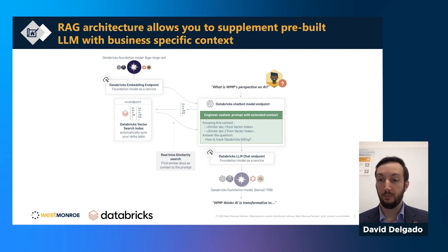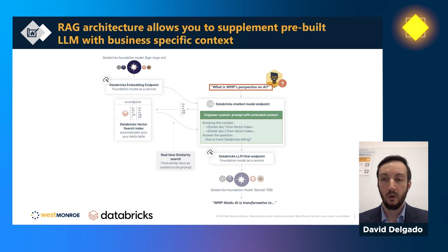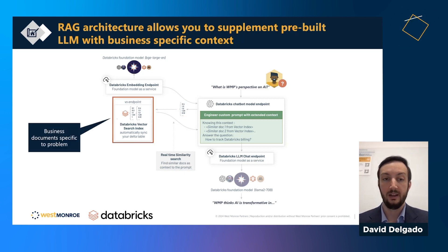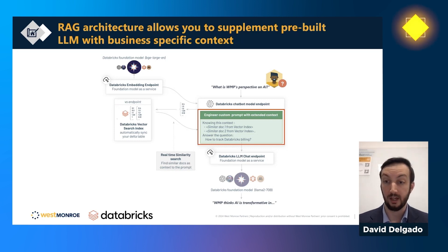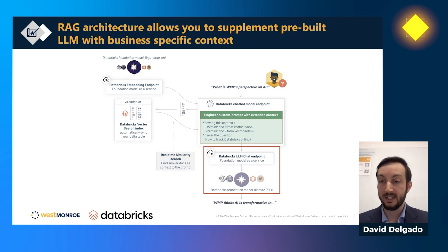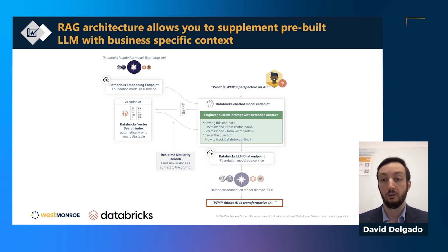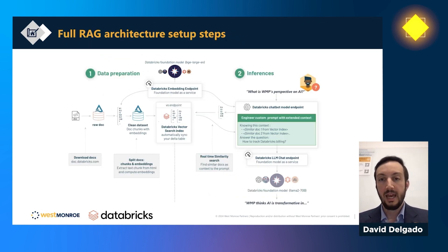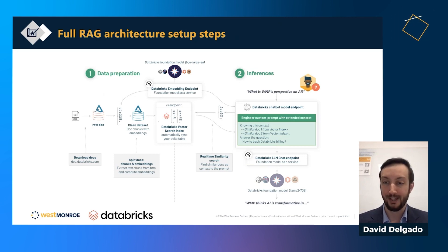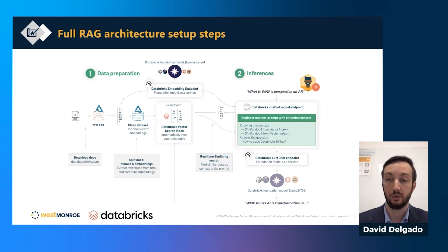This is the Databricks high-level RAG architecture. We ask the question 'What is Western Row's perspective on AI,' embed that question, and then search the business-domain-specific database where we've loaded all our documents. Once we find the right documents, we pull them in, add them to the actual prompt, pass the entire prompt to a large language model like Llama 2 on Databricks or ChatGPT, and it spits out an answer like 'Western Row thinks AI is transformative.' A lot of the details are in the data preparation, so we'll look at how to create that business-domain database.